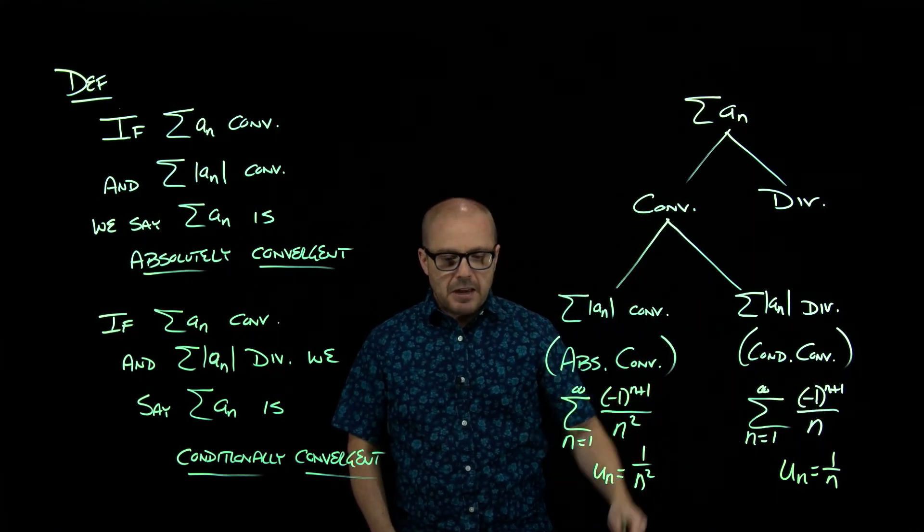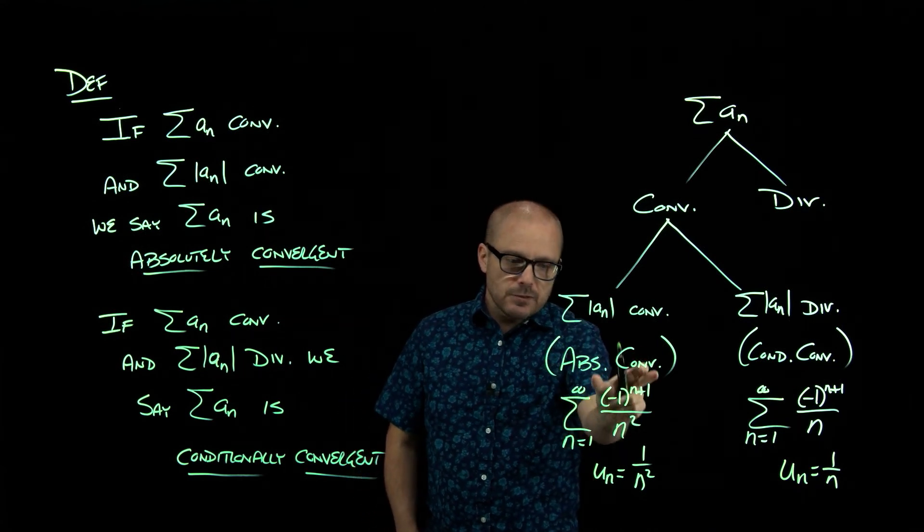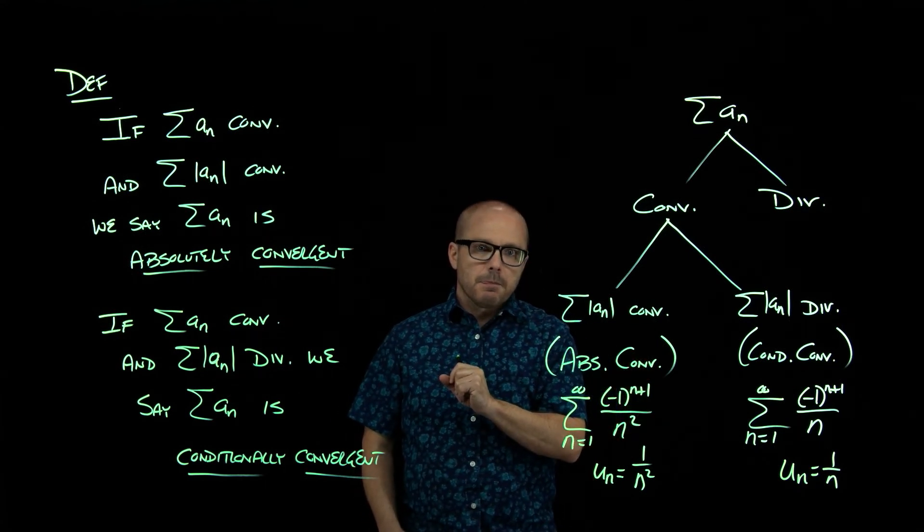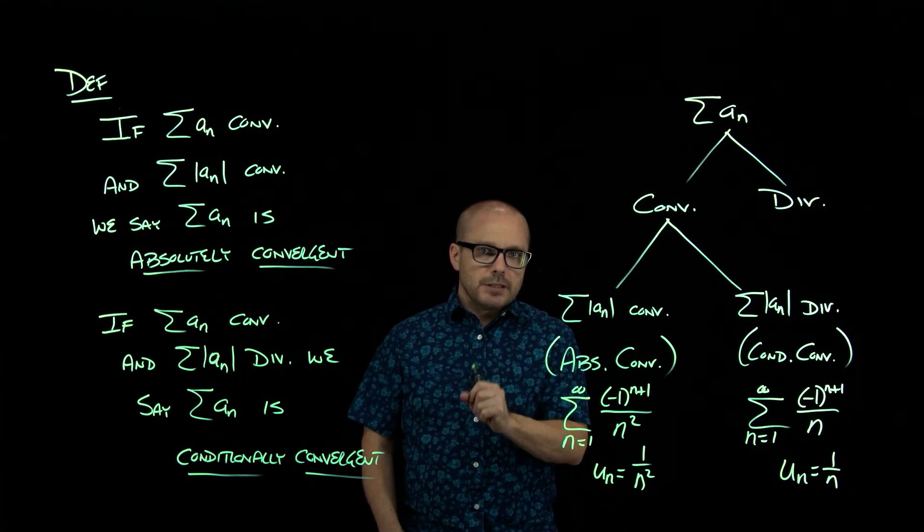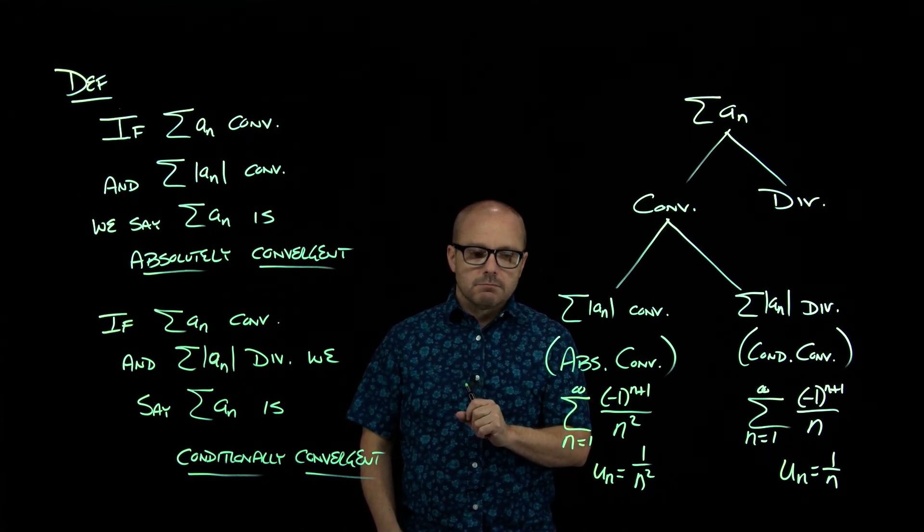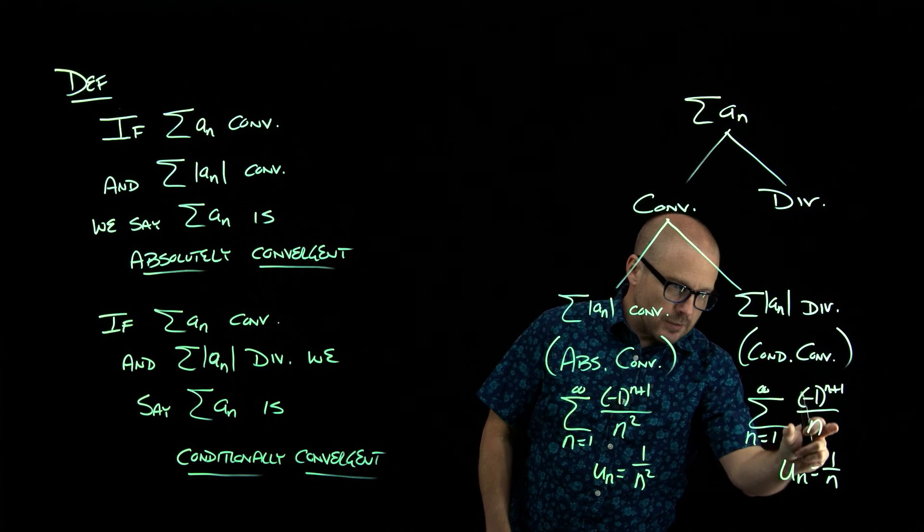But if you take the absolute value of this series, you get a convergent p series, one over n squared. If you take the absolute value of the terms of this series, you get a divergent p series.